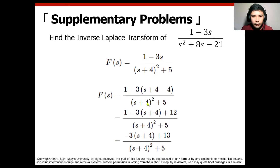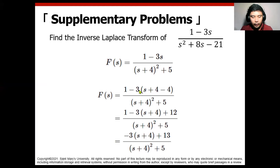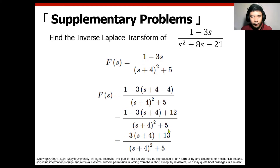There now exists a resemblance: s plus 4 in the numerator matches s plus 4 in the denominator, just as s plus a matches s plus a. Distributing negative 3 on the numerator: negative 3 times s gives negative 3s, and negative 3 times 4 gives positive 12. So we have the resemblance. Then performing arithmetic: 1 plus 12 is 13. This yields two separate terms in the numerator.